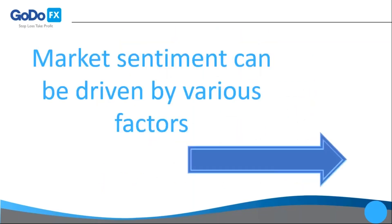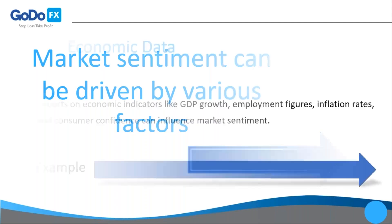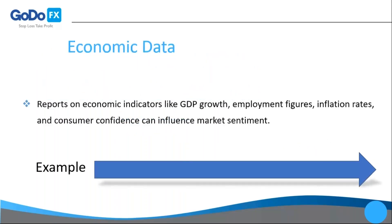Market sentiment can be driven by various factors. We will look at each factor and give a practical example of how to trade based on it. The first factor is economic data — reports on economic indicators such as GDP growth, employment figures, inflation rates, and consumer confidence can influence market sentiment.